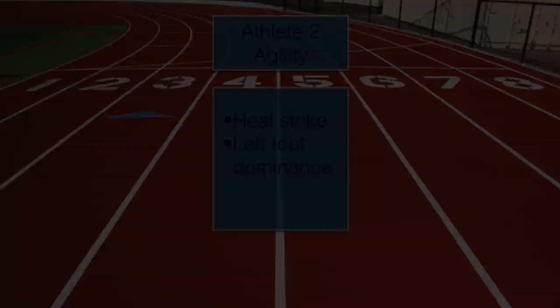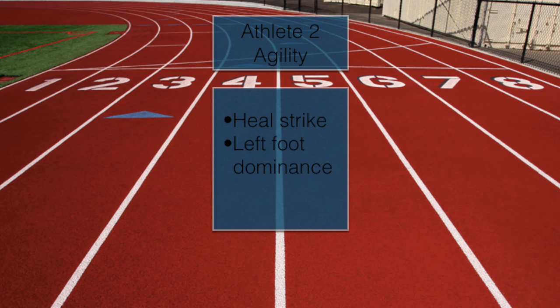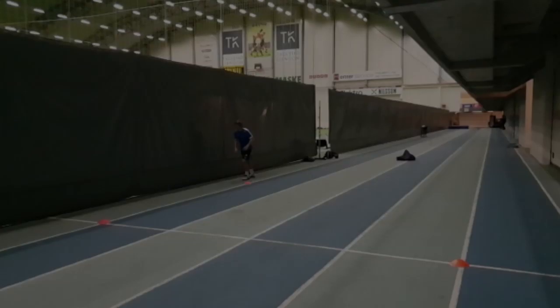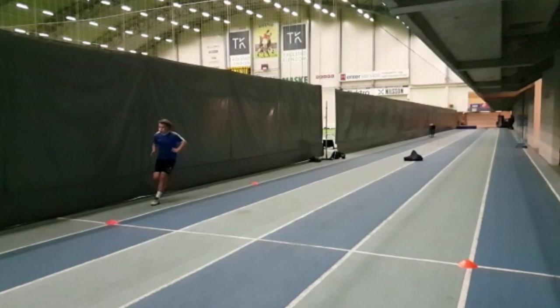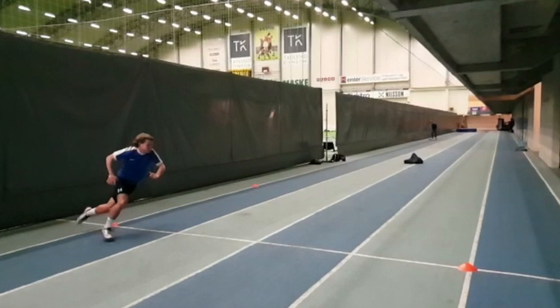For athlete 2, we also used the L-test to assess agility, primarily analyzing the heel strike and looking at the difference in leg dominance. In both still pictures of athlete B performing the L-test, we can see that the athlete is slowing down for the turn using his right foot. However, both times this happens in a fairly neutral position of the foot and not heel-dominant, which would be a lot more rapid.